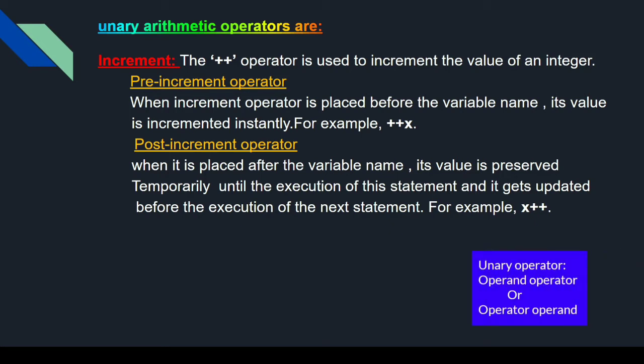Unary operator क्या होता है: operator operand — मतलब एक operand, एक operator. Binary में क्या होता है: 2 operands, 1 operator.